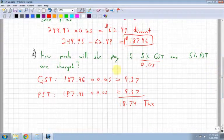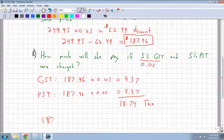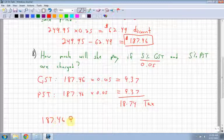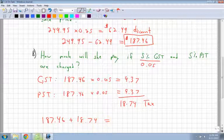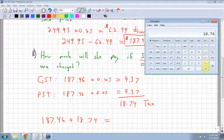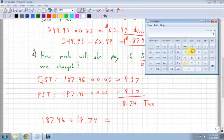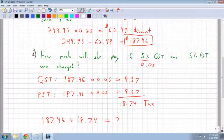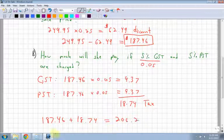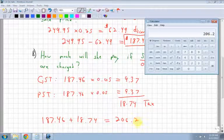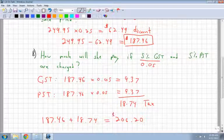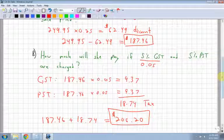So how much will she pay? Well, she's going to pay the $187.46 plus my $18.74. So what's the total going to be? $18.74 plus $187.46. $206.20. Now notice it's 0.2, but that doesn't mean 2 cents because there's a zero after that I have to add because it's money. So it's $206.20 is what she's going to pay.